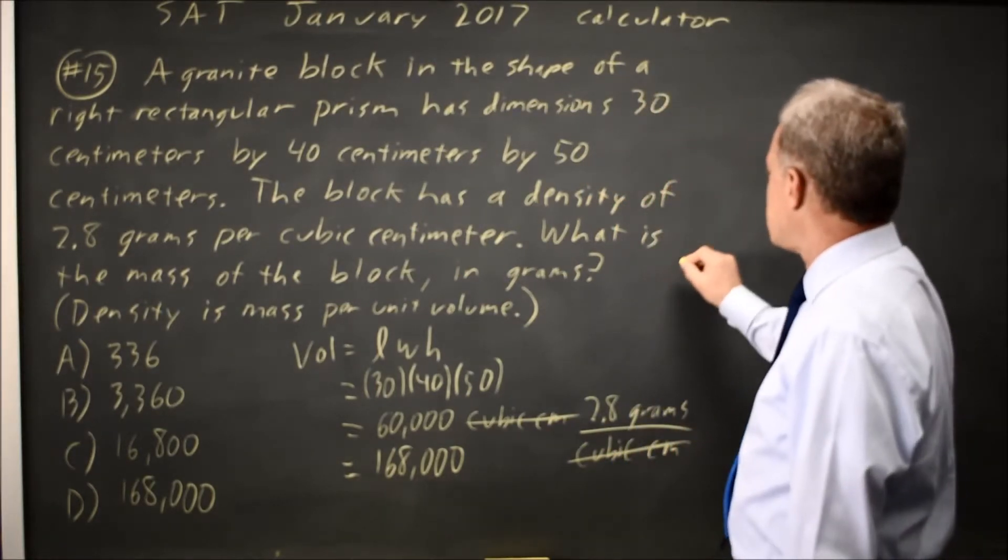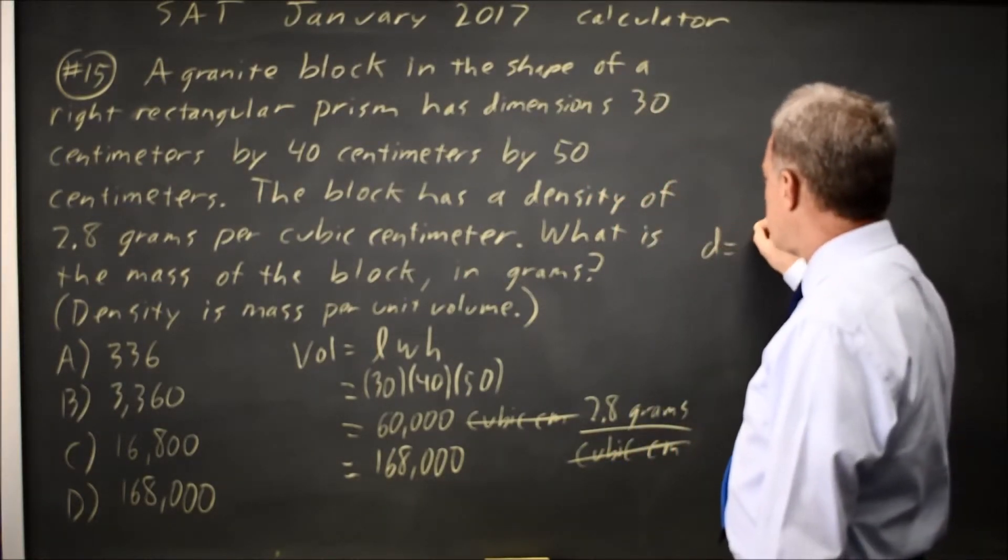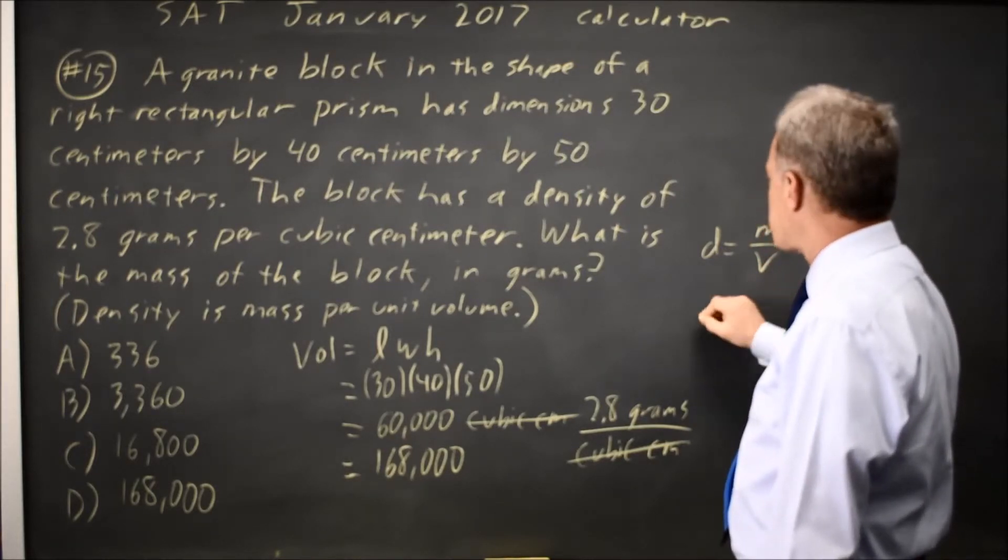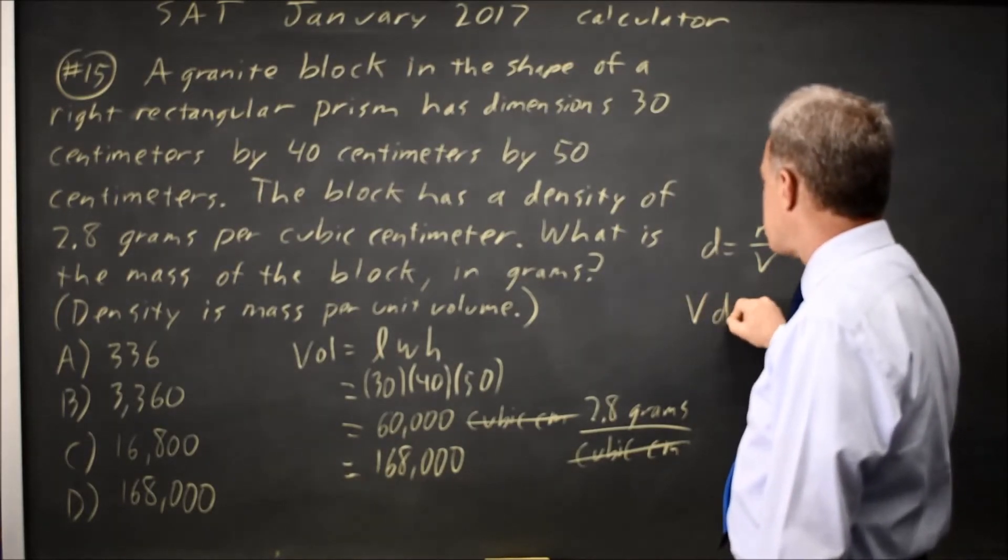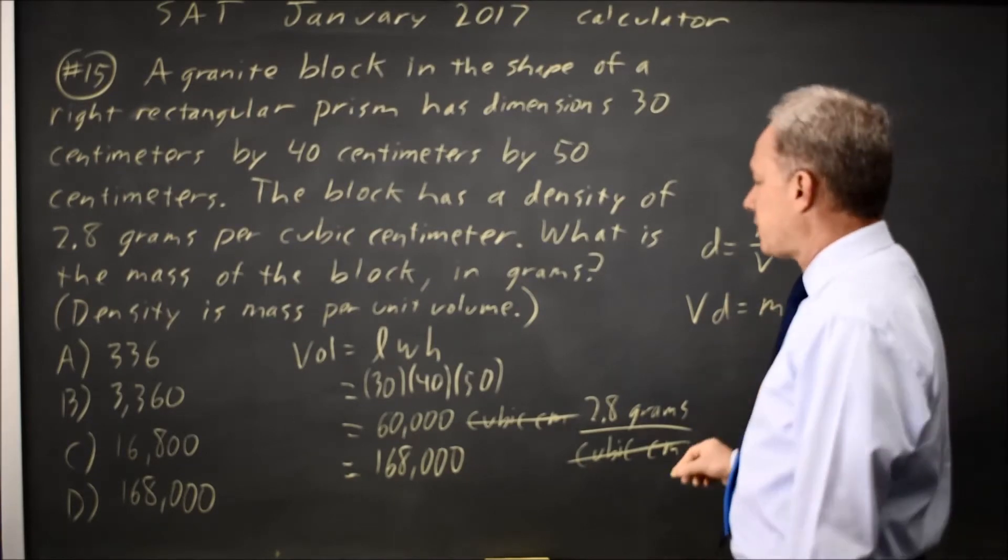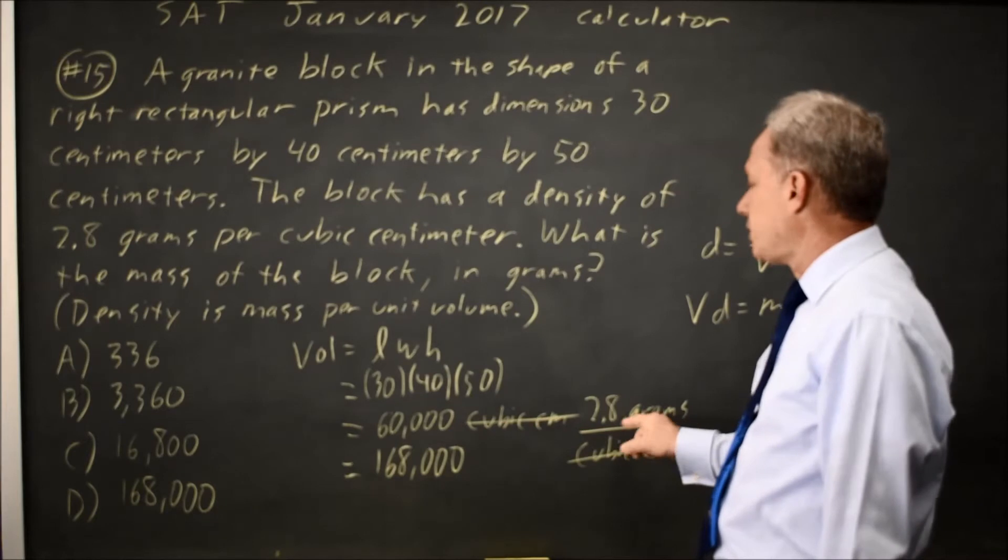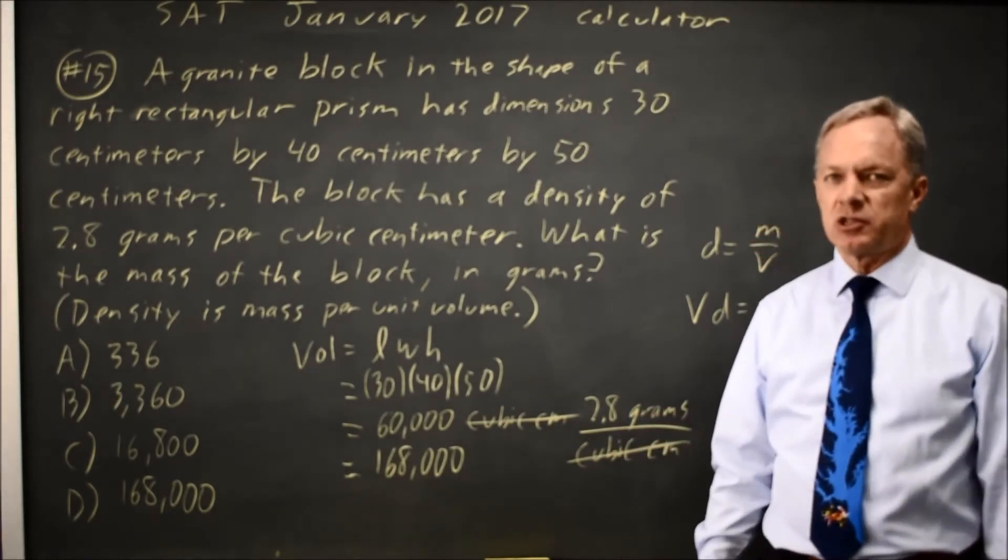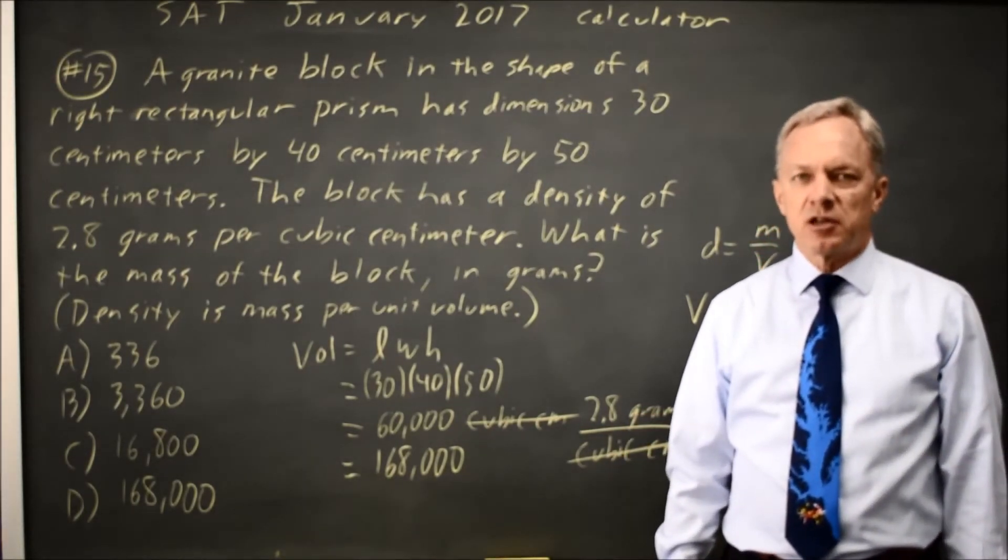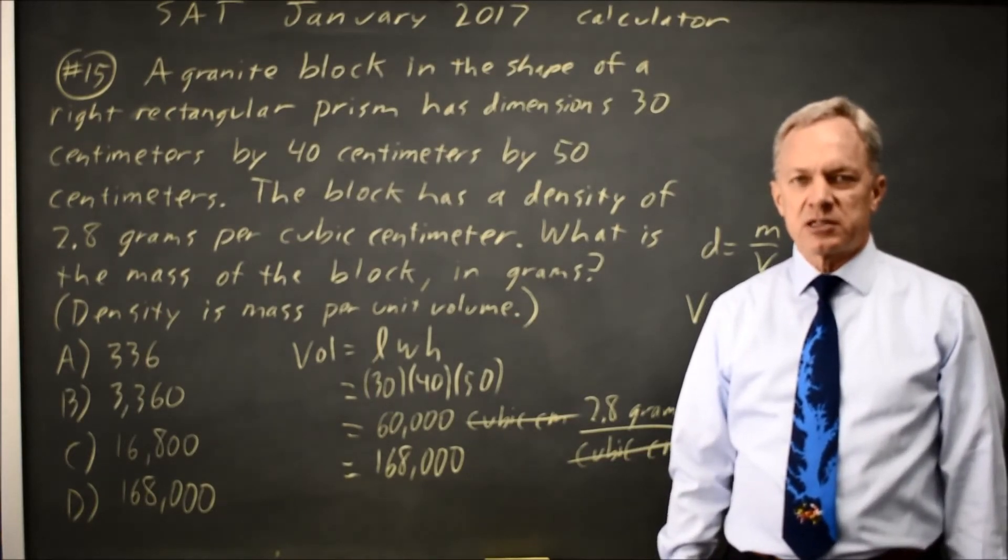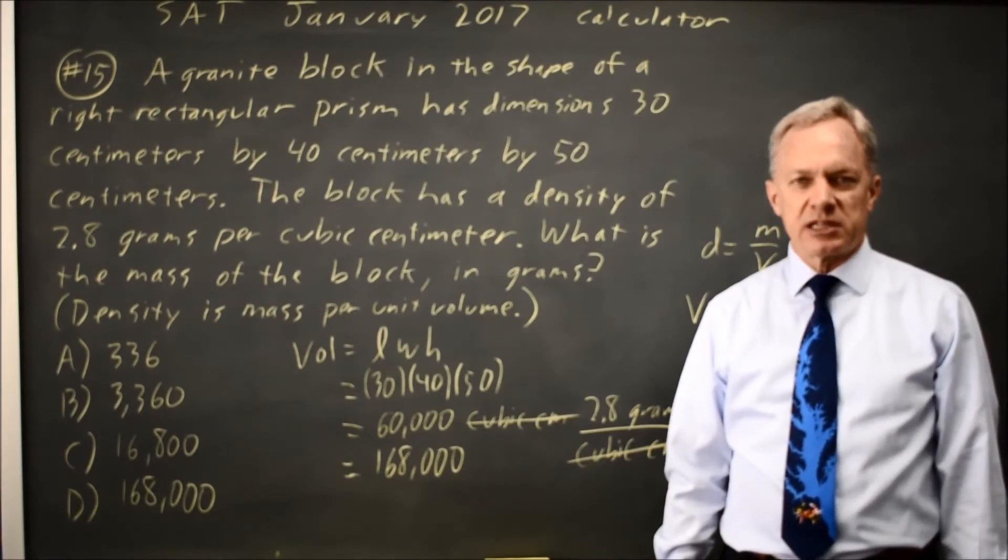Alternatively, since density equals mass over volume, if I multiply both sides by V, I get volume times density equals mass, and that's another way of figuring out that we multiply our volume by 2.8 rather than dividing our volume by 2.8. Either way, College Board often asks you to go from volume and density to mass, or volume and mass to density, or some variant of that.